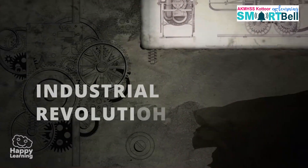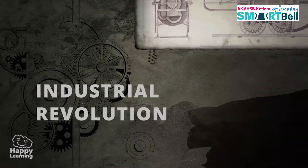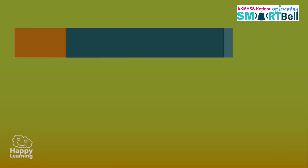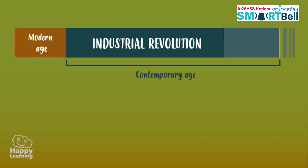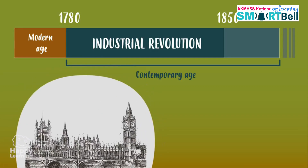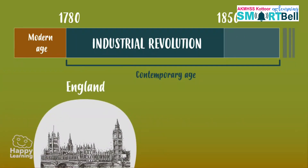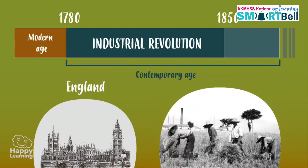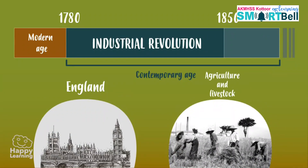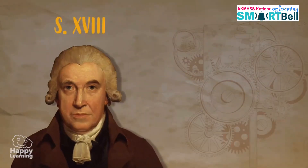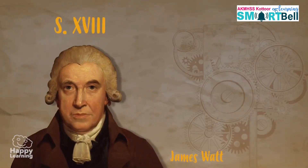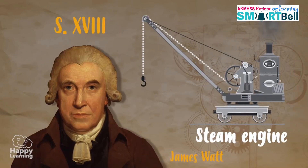The Industrial Revolution is the stage of history that goes from 1780 to 1850 and began in England. For almost the entire history of mankind, life had been based on agriculture and livestock. At the end of the 18th century, the Englishman James Watt invented — or rather perfected — the steam engine.